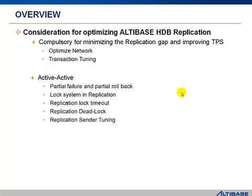Secondly, there are considerations for active-active formation type. In replication, the xlog is sent in a unit of record. Therefore, each record is transformed to each xlog and sent. While doing that, partial failure or partial rollback can occur. So we're going to look at when this could happen.